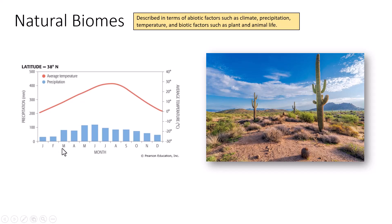In this particular biome the ambient temperature spikes over the June, July, and August months — so the summer — suggesting this is a northern hemisphere biome. It decreases in winter months. You'll also see precipitation increases along the same trajectory as the temperature, so this biome receives more rain during summer. Even so, the precipitation is only around 100 millimeters, which is about 10 centimeters — very little rainfall.